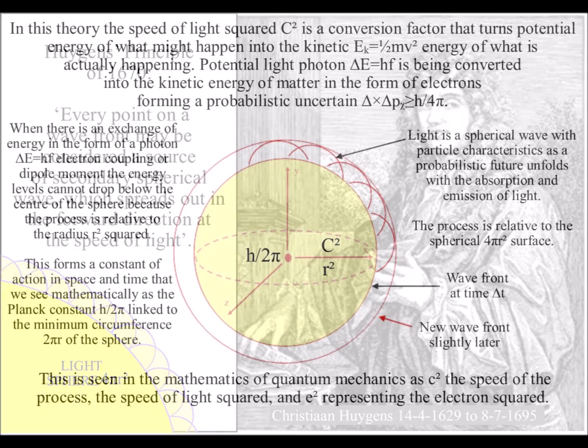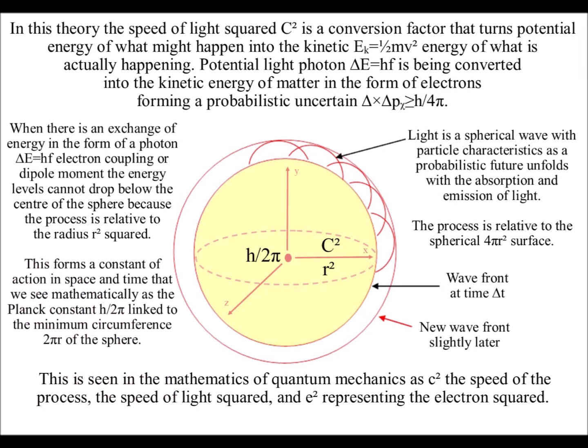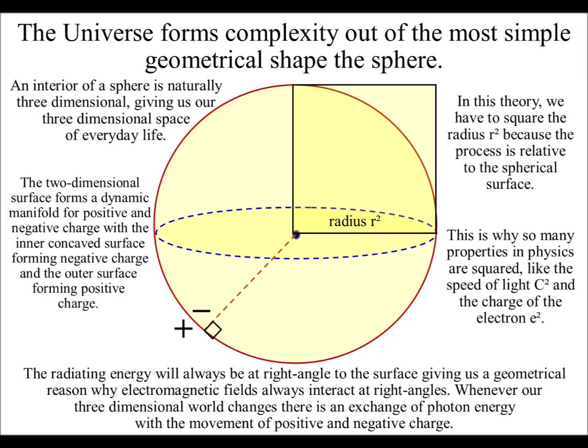An interior of a sphere is naturally three-dimensional, giving us our three-dimensional space of everyday life. In this theory, we have to square the radius because the process is relative to the spherical surface. This is why so many properties in physics are squared, like the speed of light, c squared, and the charge of the electron, e squared.